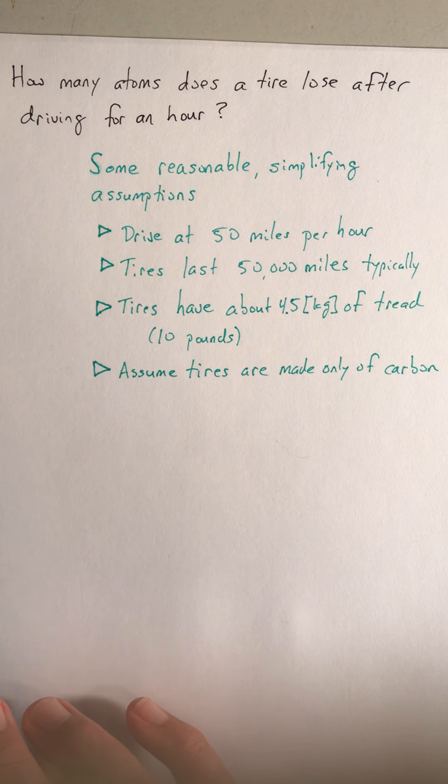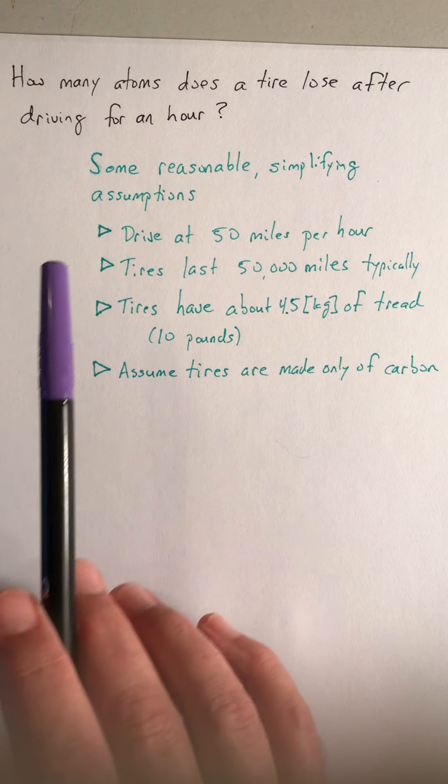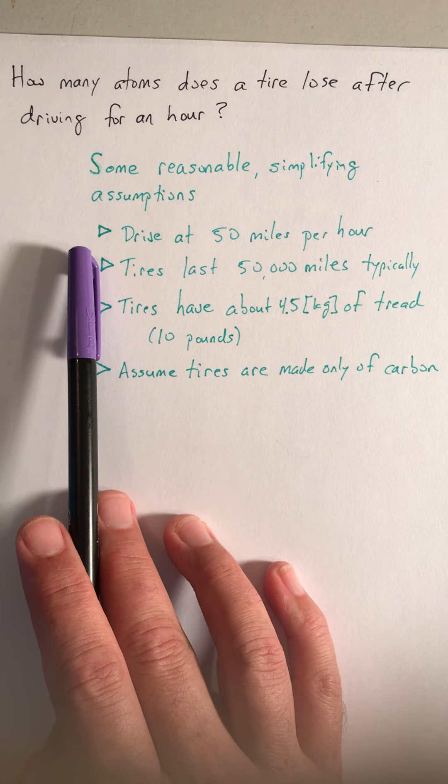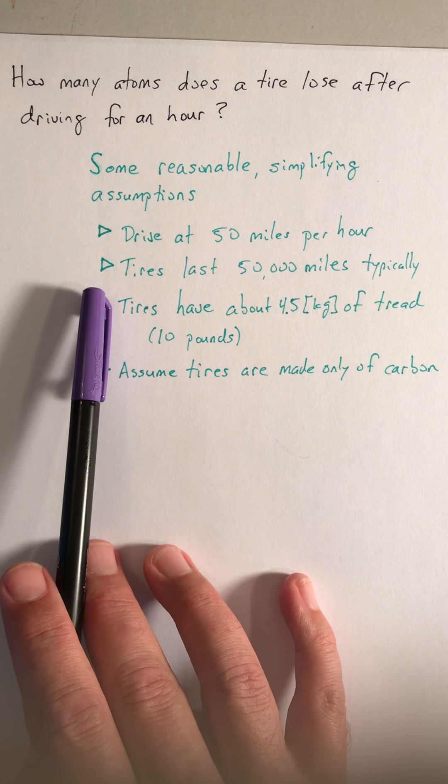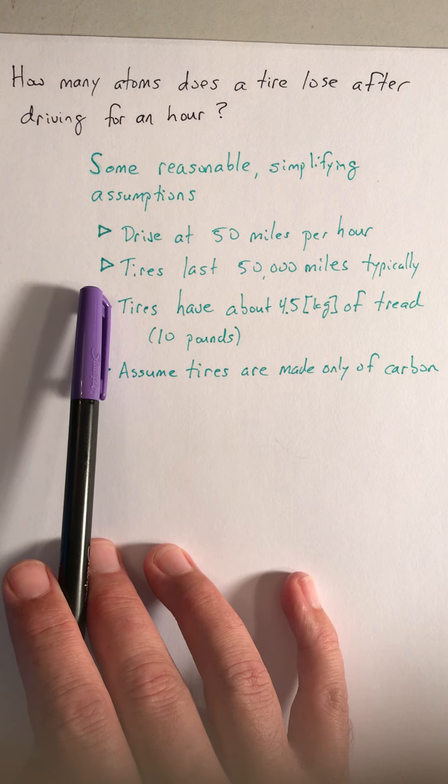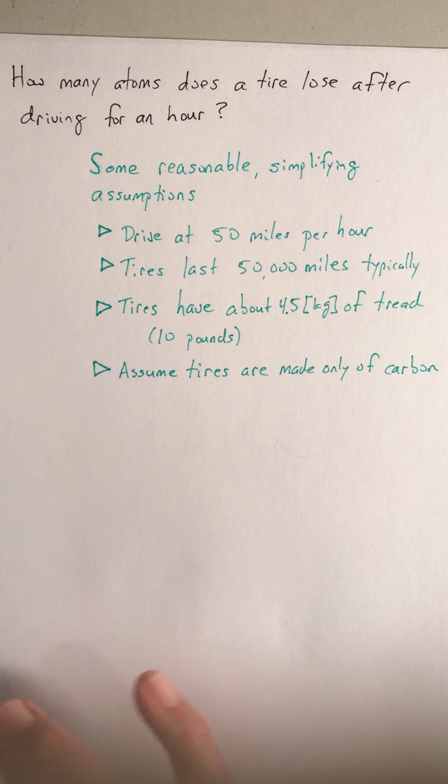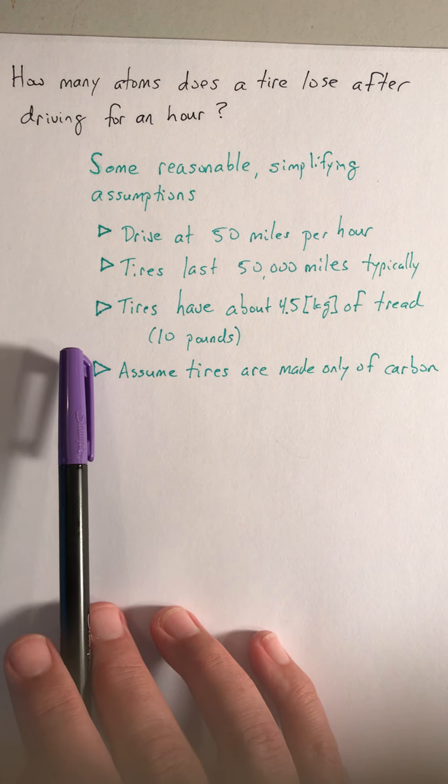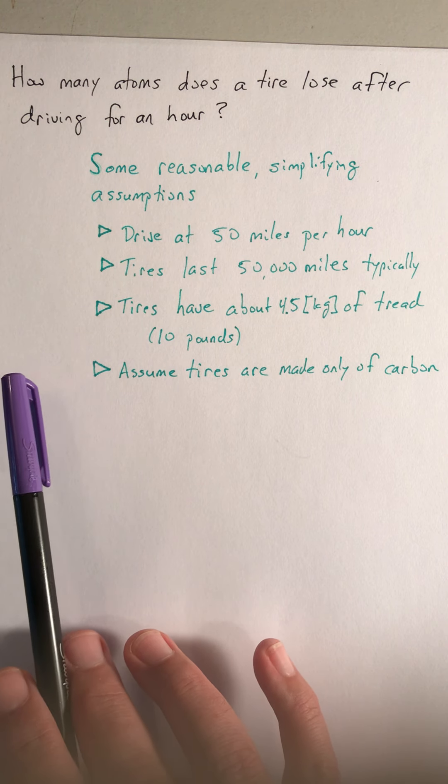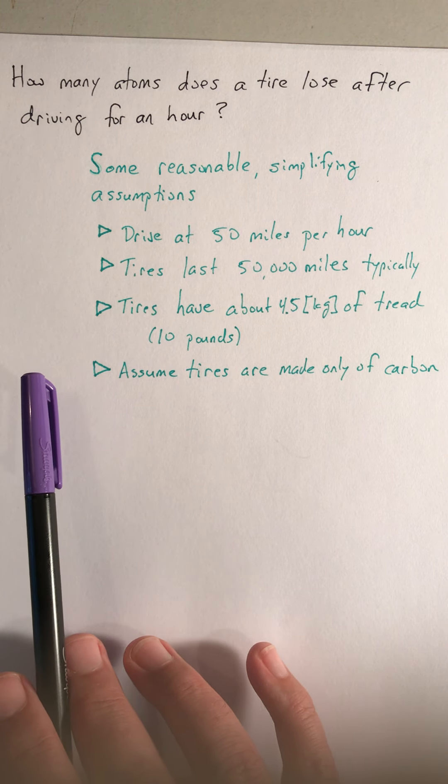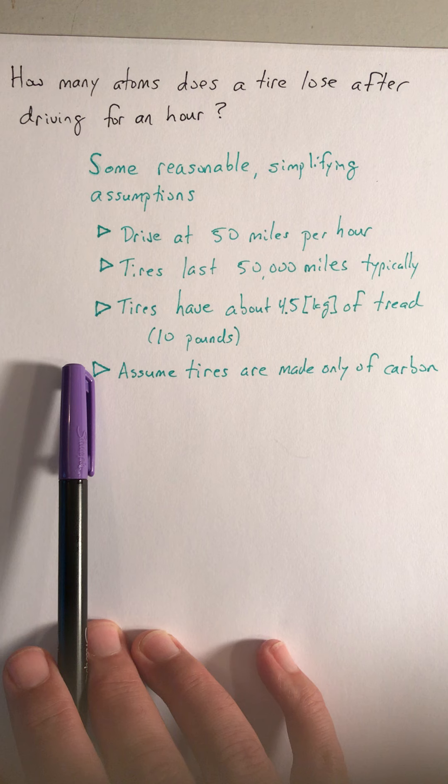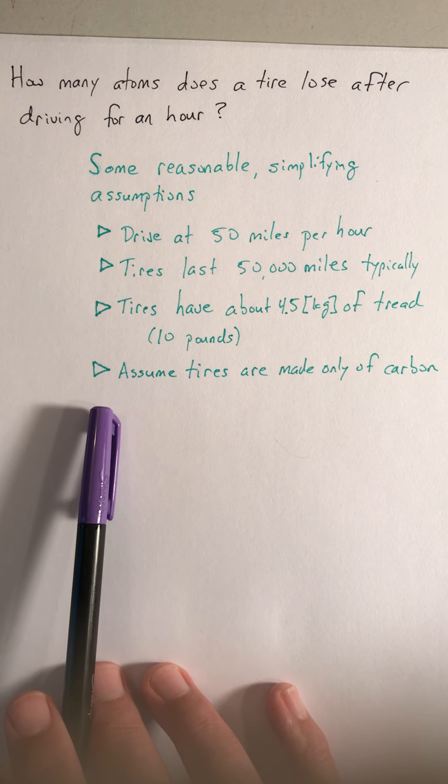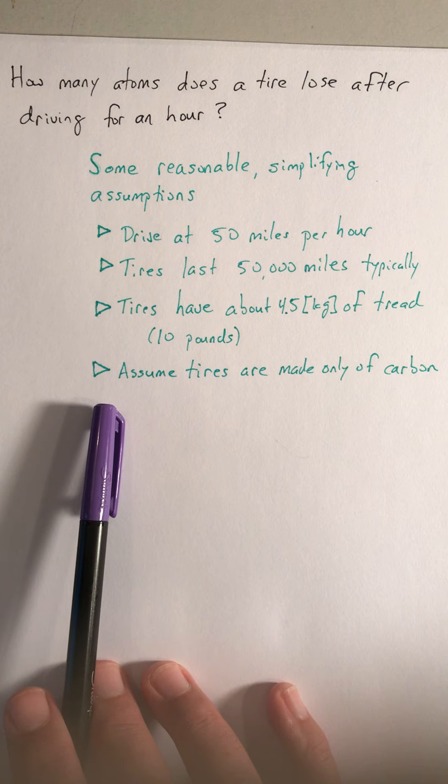Our assumptions that we're going to build our answer around: you drive typically about 50 miles per hour, tires last about 50,000 miles, tires are about 10 pounds—that works out to be about 4.5 kilograms of tread on them. To simplify our calculation, we're going to assume that those tires are made only of carbon.